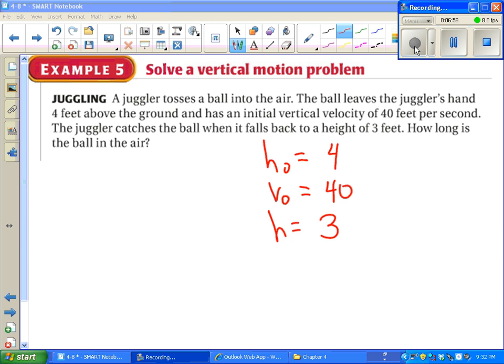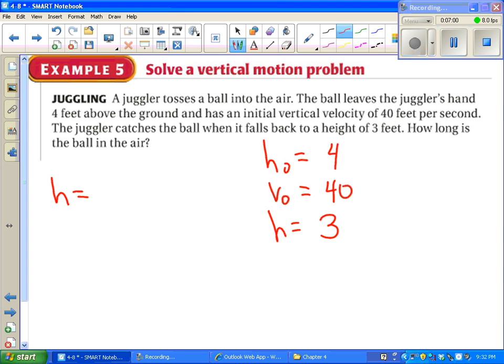Once you have these numbers, you've got to plug them into that formula that we just saw. h equals negative 16t squared plus initial velocity times t plus initial height. We know everything except for t, which is what we're trying to find out. So go ahead and pause the video and try to plug in the numbers we know. And I'll check in with you before you try to find the solution.